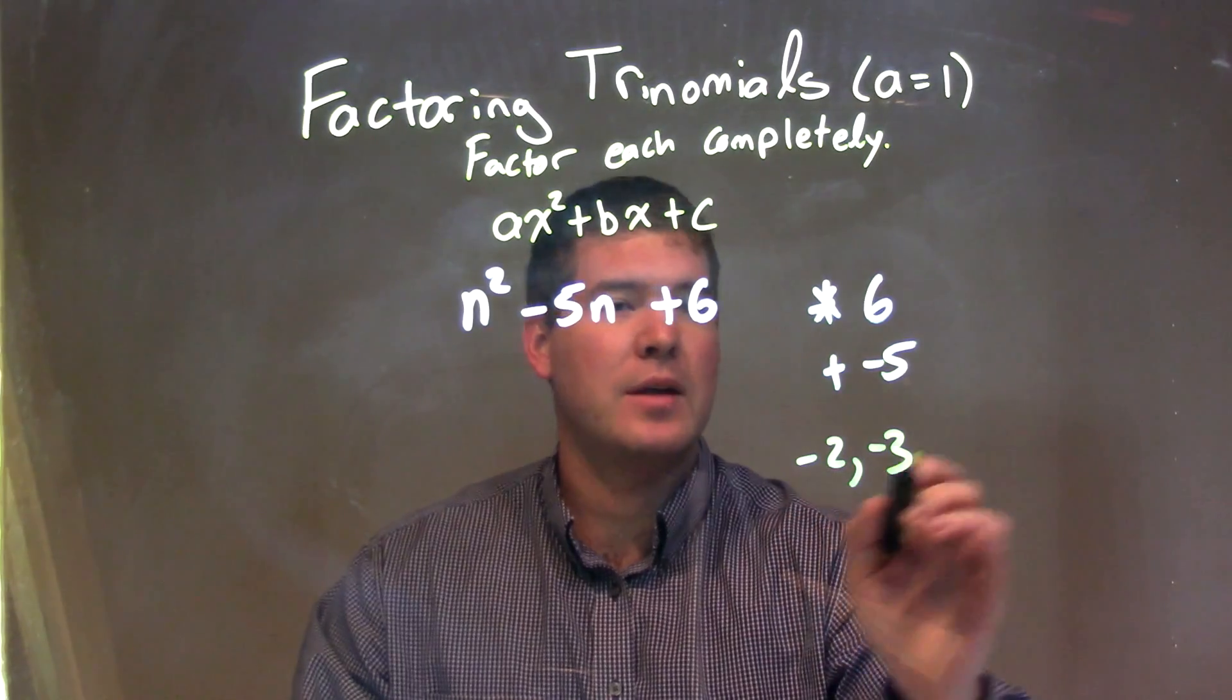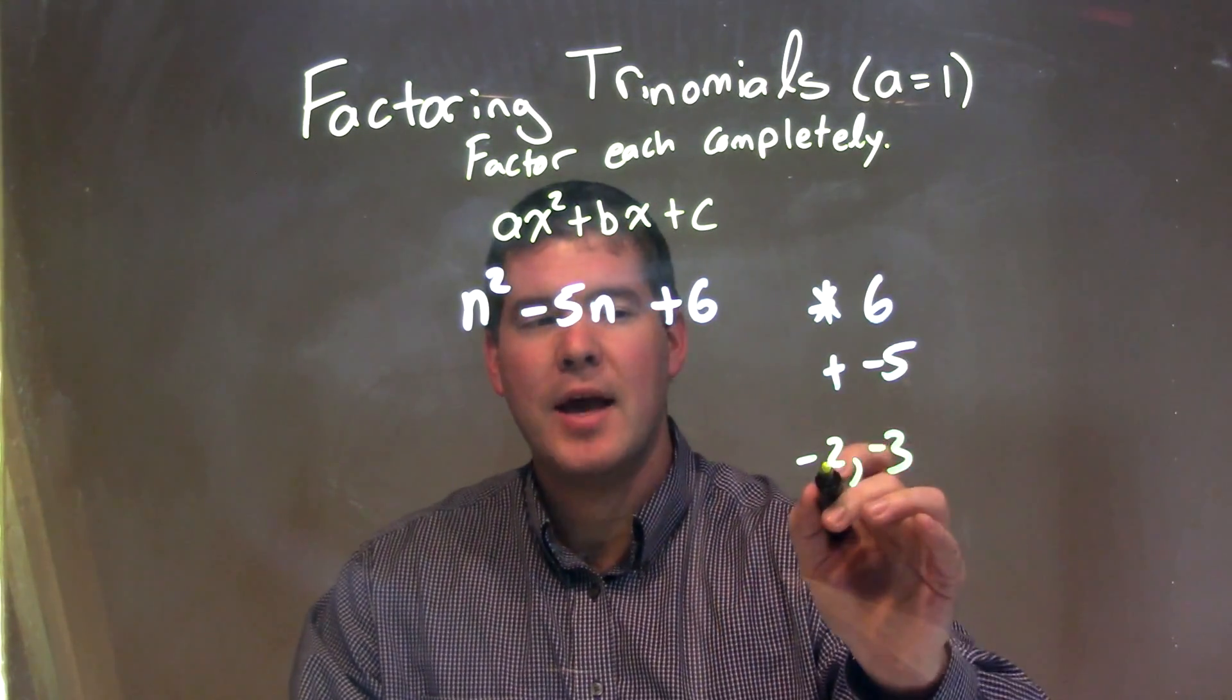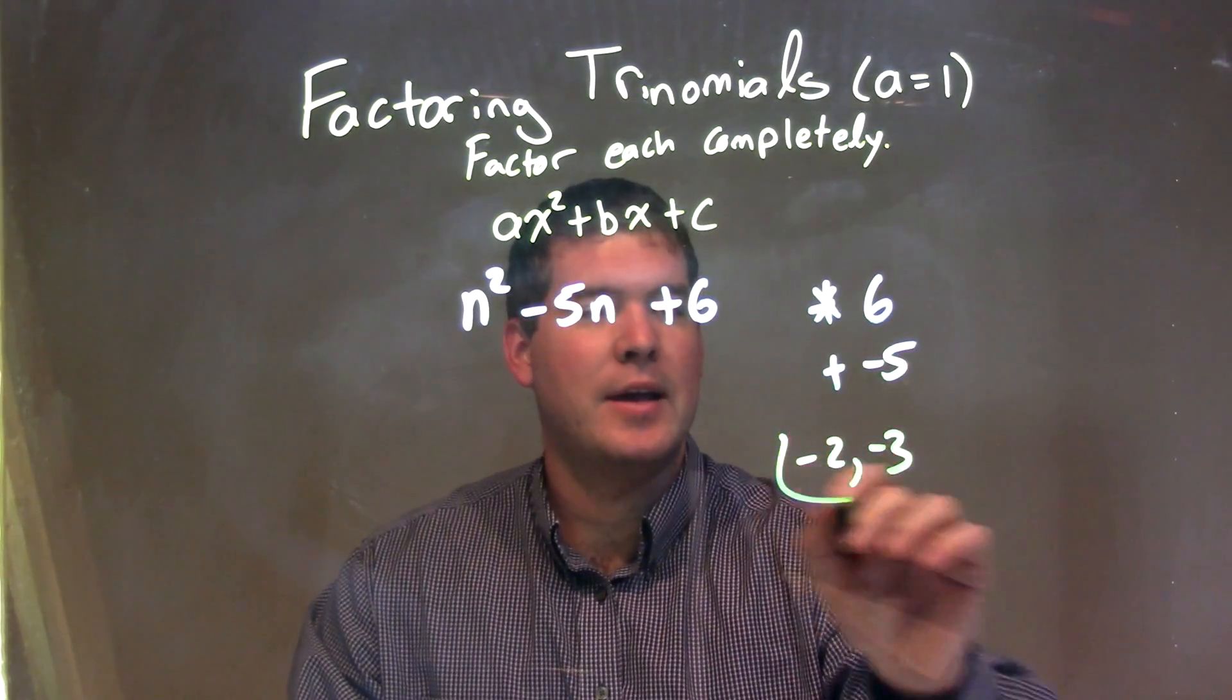The reason why I'm doing that is negative 2 times negative 3 is positive 6, and negative 2 plus negative 3 is negative 5.